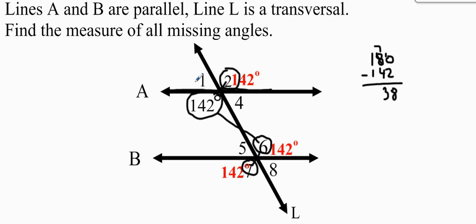That's the measure of angle one. Since one and four are vertical angles, that's the measure of angle four. Since four and five are alternate interior angles, that's the measure of angle five. And finally, since five and eight are vertical, that's the measure of angle eight.